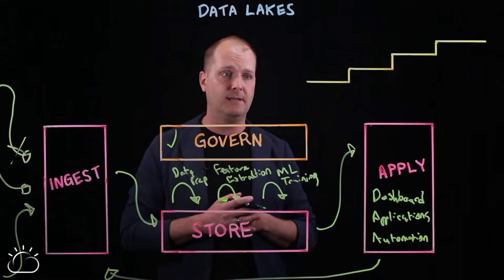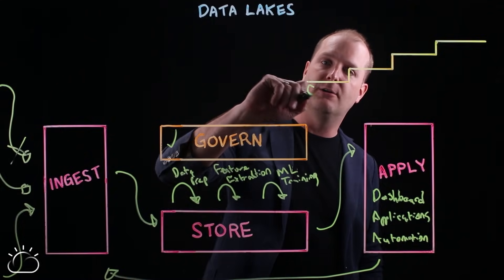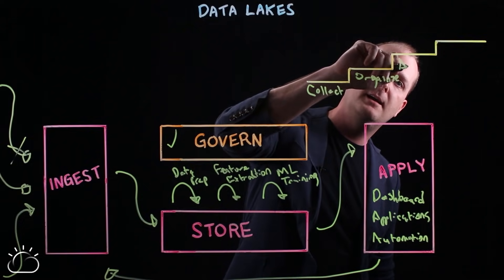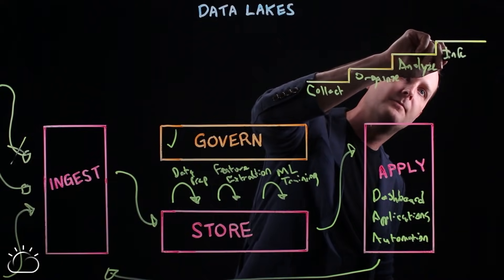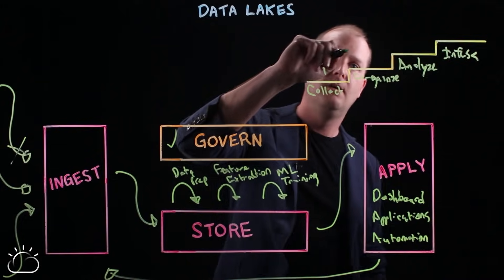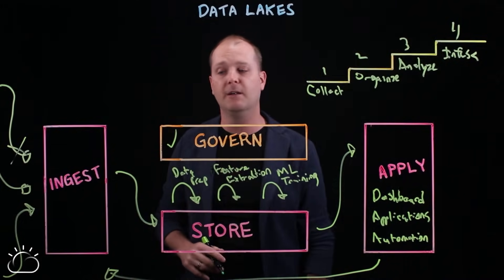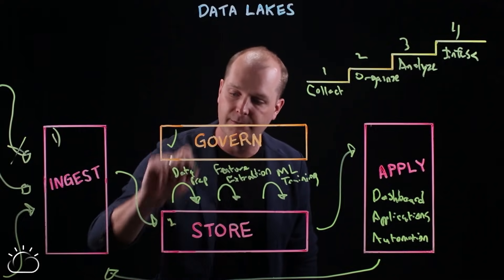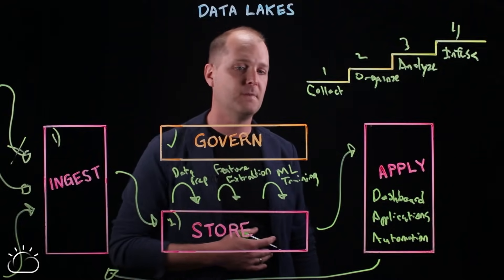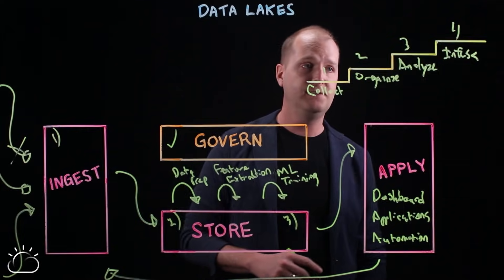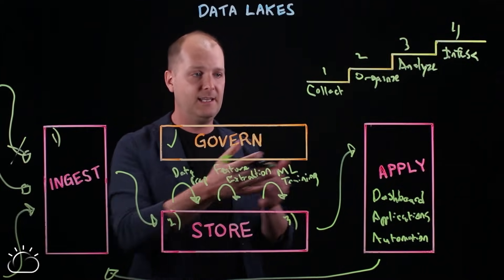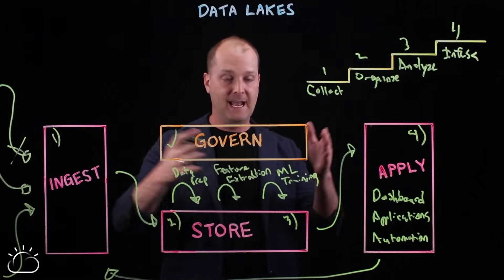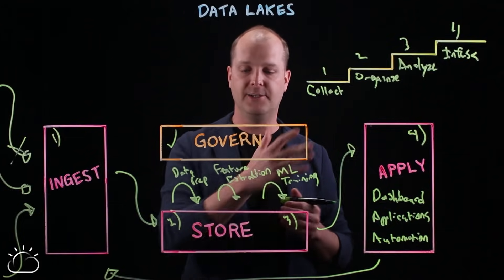Some of you may have heard us talk about the AI ladder. When we talk about that, we talk about four steps: collecting data, organizing data, analyzing, and infusing. Those four steps are represented throughout this data lake environment. Collecting individual sources of data maps to the ingestion step. Data preparation and feature extraction in a governed fashion is what we mean by organizing data. ML model training is a key example of data analysis. And infusing the insights from the data lake into applications is this last step. There's a very clear linkage between climbing this AI ladder and a data lake as a vehicle that can help you make that journey.